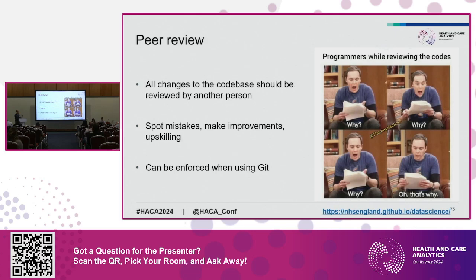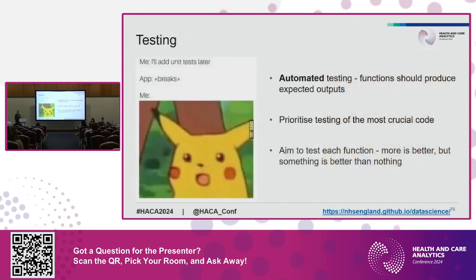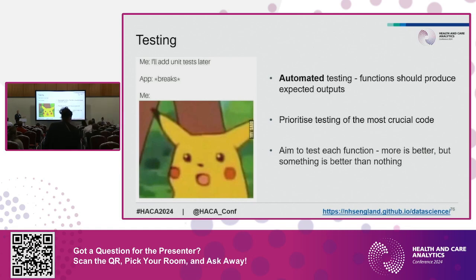Another advantage of Git is that it can enforce peer review on your project. Because if you're automating something, you remove manual error, but if you get it wrong, you've automated something that's wrong and you're going to be wrong every time. With Git, you can make it so that any change to the code base just won't let you make the change unless another person has approved it. We can go a step further with automated testing. Functions give you the same output for any given input, so we can give a function a certain input, and since we know what the output should be, we can test the output it gives us versus the correct output.